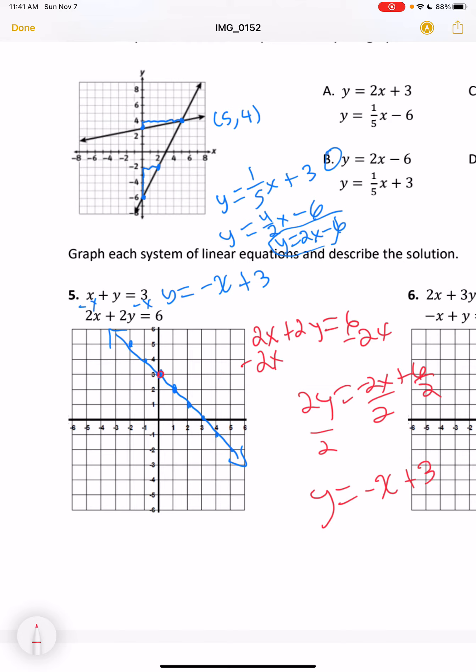And we do end up with y equals negative x plus 3. So that is the exact same line that we are graphing. So we do end up with infinitely many solutions.